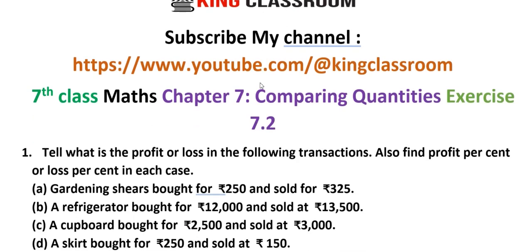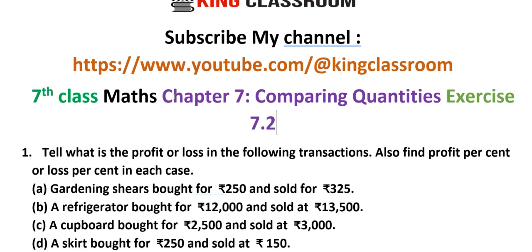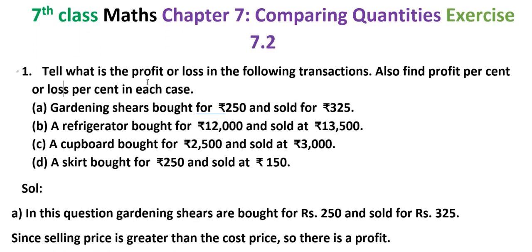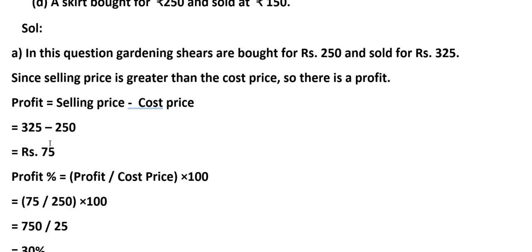Dear students, today we are covering 7th class Maths, Chapter 7: Comparing Quantities, Exercise 7.2. We are giving all problem solutions here. Now coming to the class — 7th class Maths, Chapter 7, Comparing Quantities, Exercise 7.2, all problems. First problem: tell what is the profit or loss in the following transactions. Also find the profit percentage or loss percentage in each case. Solution: we are giving A, B, C, D problems, each solution.